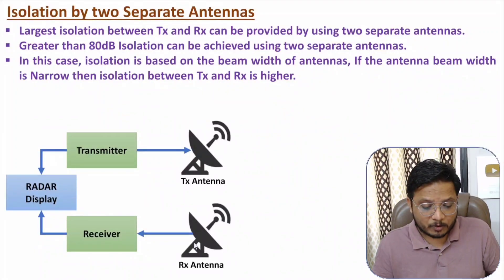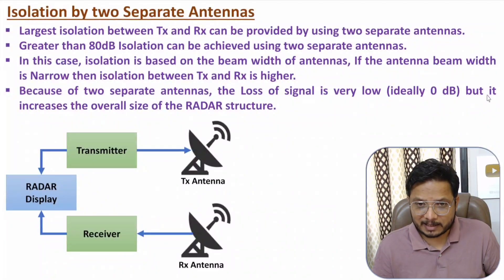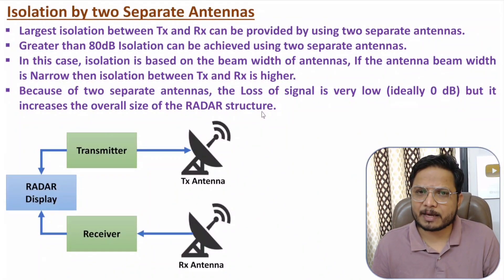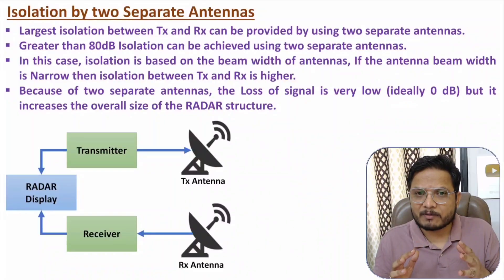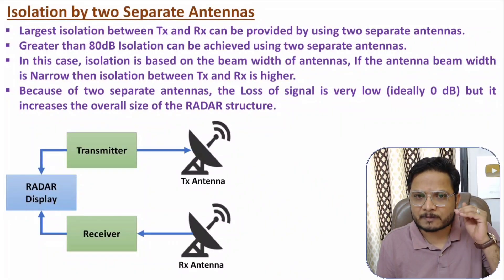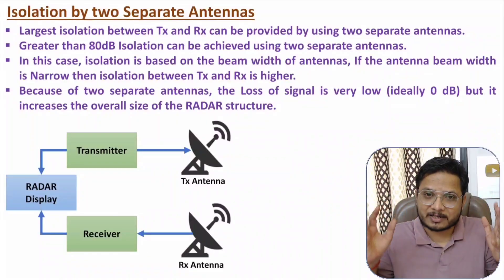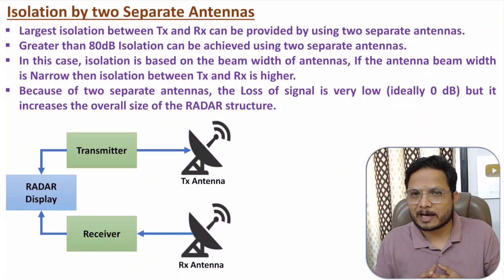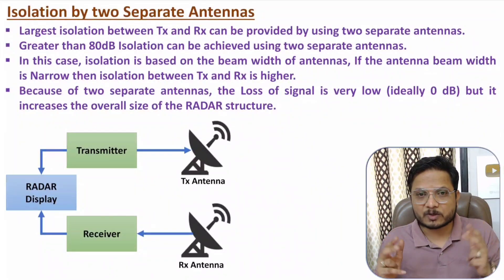If you use two separate antennas, loss of signal is very low — ideally you can say it is zero. But it increases the overall size of the radar structure because we are having two separate antennas. To summarize: if you use microwave devices, you will use a single antenna, but there will be issues of signal loss as well as reduced isolation. If you want better isolation, you use two antennas, but the overall size of the structure will increase. I hope you have understood isolation of transmitter and receiver in radar system. If you have anything to share, please note it down in the comment section. Thank you so much for watching this video.